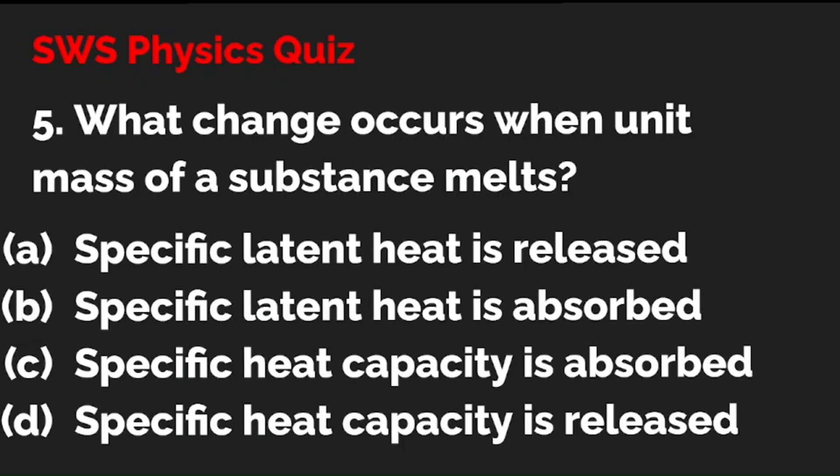Question 5: What change occurs when unit mass of a substance melts? Option A: specific latent heat is released. Option B: specific latent heat is absorbed. Option C: specific heat capacity is absorbed. Option D: specific heat capacity is released. The correct answer is 5B — specific latent heat is absorbed.